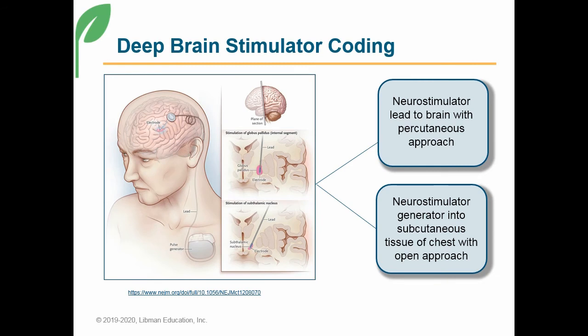The deep brain stimulator is just like all the other two-part devices that we code. The generator is the unit that does the work and the lead delivers the signal. The location for the deep brain stimulator leads would be the globus pallidus and the subthalamic nucleus. The insertion tables are not specific enough to allow coding of these body parts individually, so we'll need to use zero for brain as the location when coding the insertion of the leads for the deep brain stimulator.